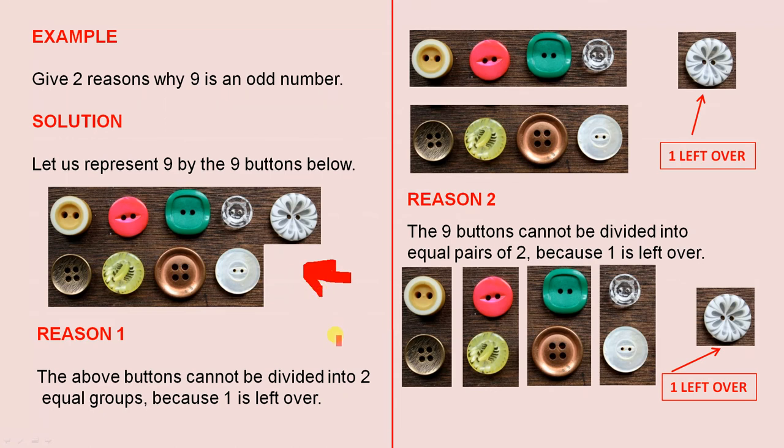This is the first reason why nine is odd. The above buttons cannot be divided into two equal groups because one is left over.